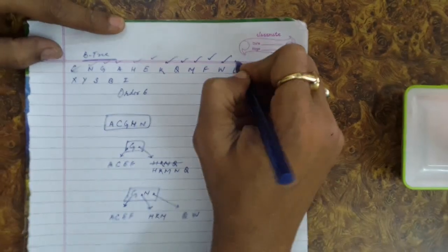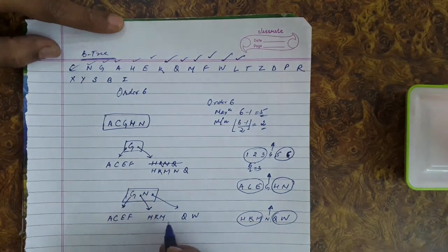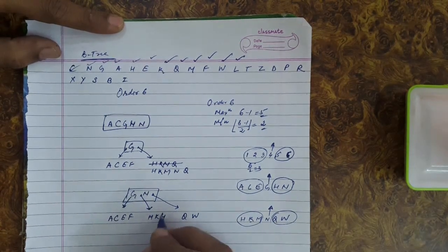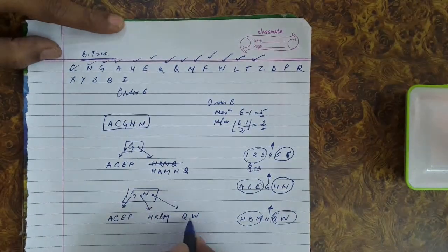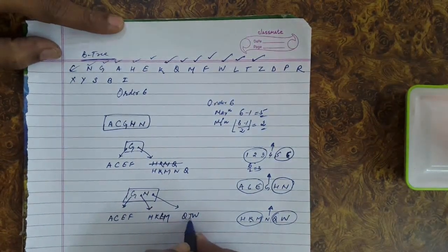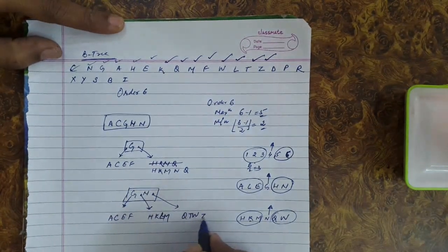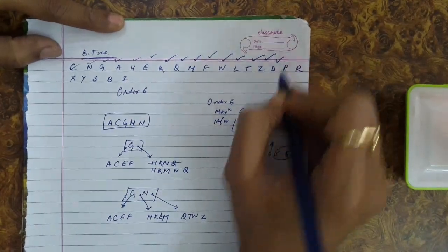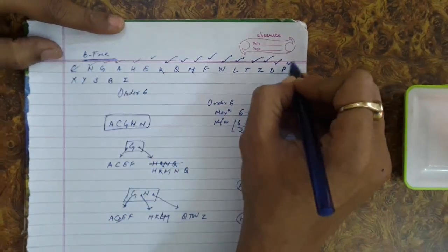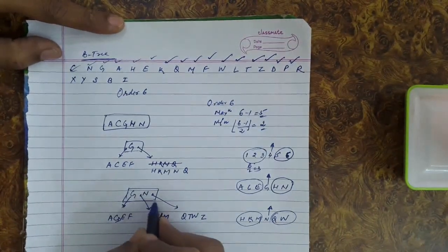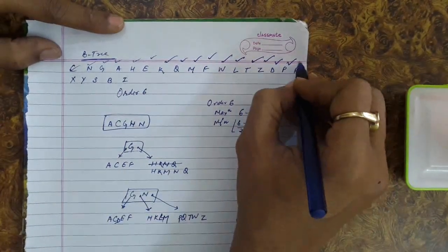Now let's do the insertion of L — it comes into the H, K, M node, making it H, K, L, M. T will come into the Q, W node. Z, which is greater, will also come to the right node. D will come into the A, C, E node. O and P will come into the Q node area. No violation so far.